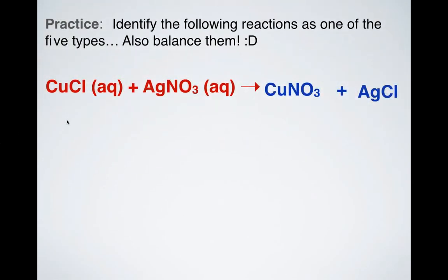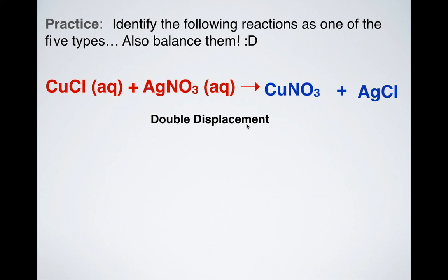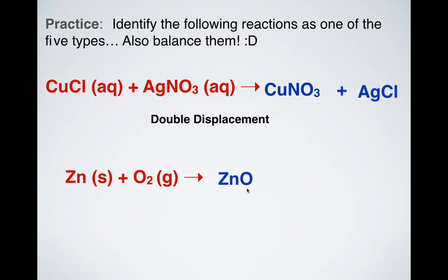We've got copper(I) chloride and silver nitrate, making copper(I) nitrate and silver chloride. That is double displacement. What do I need to do to balance that? It is already balanced — trick question! What about this? I've got zinc and oxygen, and I'm making zinc oxide — synthesis reaction. If I put a 2 in front of ZnO, that balances out my oxygens, but then I have to put a 2 in front of Zn to balance out the zincs. Thank you.